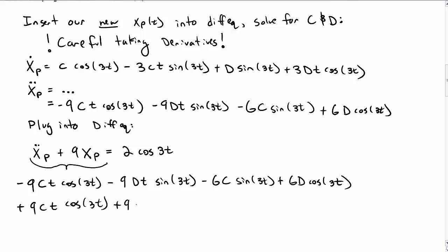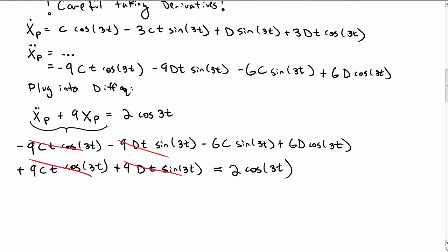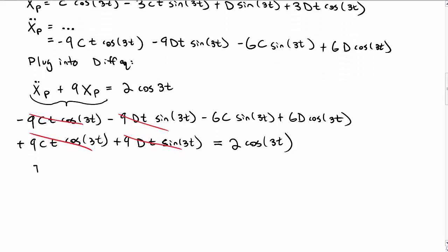Plus 9 times x, that's equal to the term on the right hand side. I can cancel terms that are the same, and comparing terms on the left and right hand side of the equation.